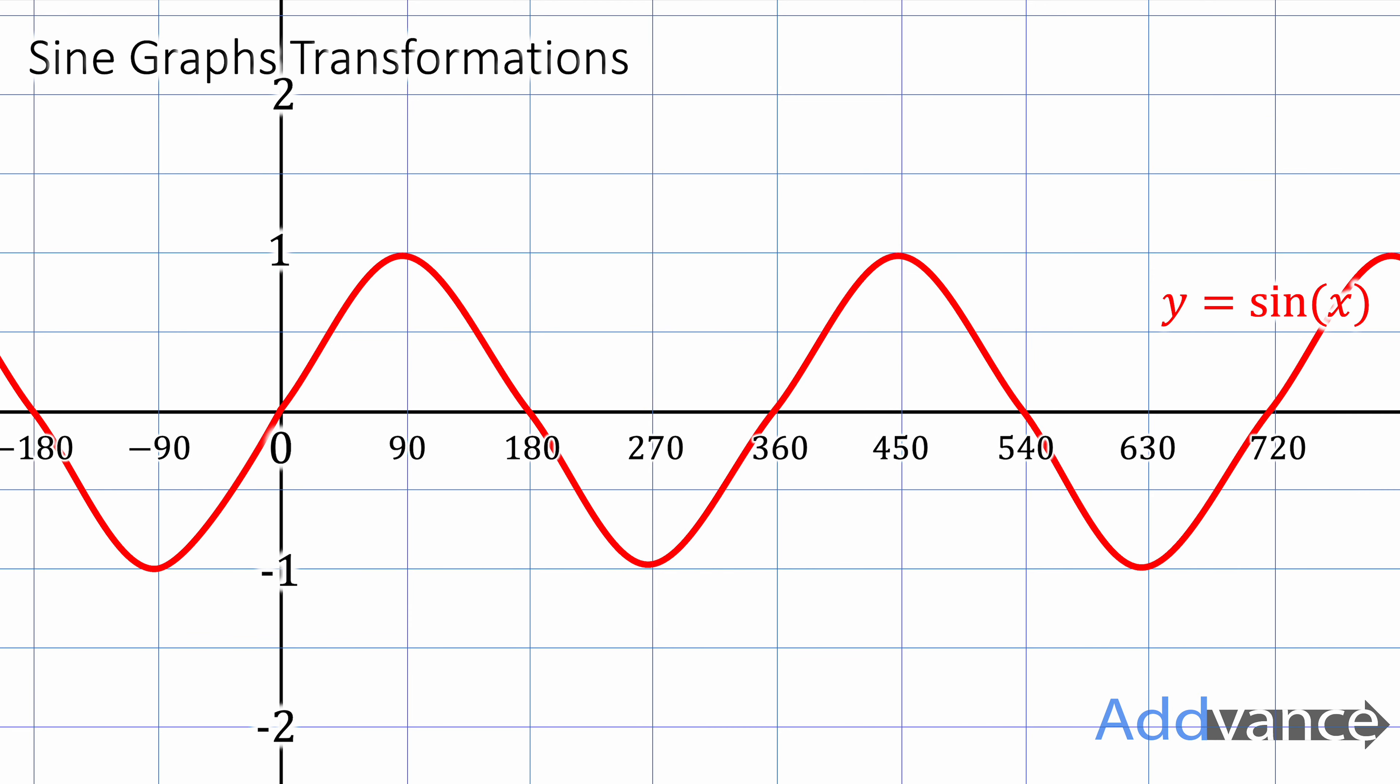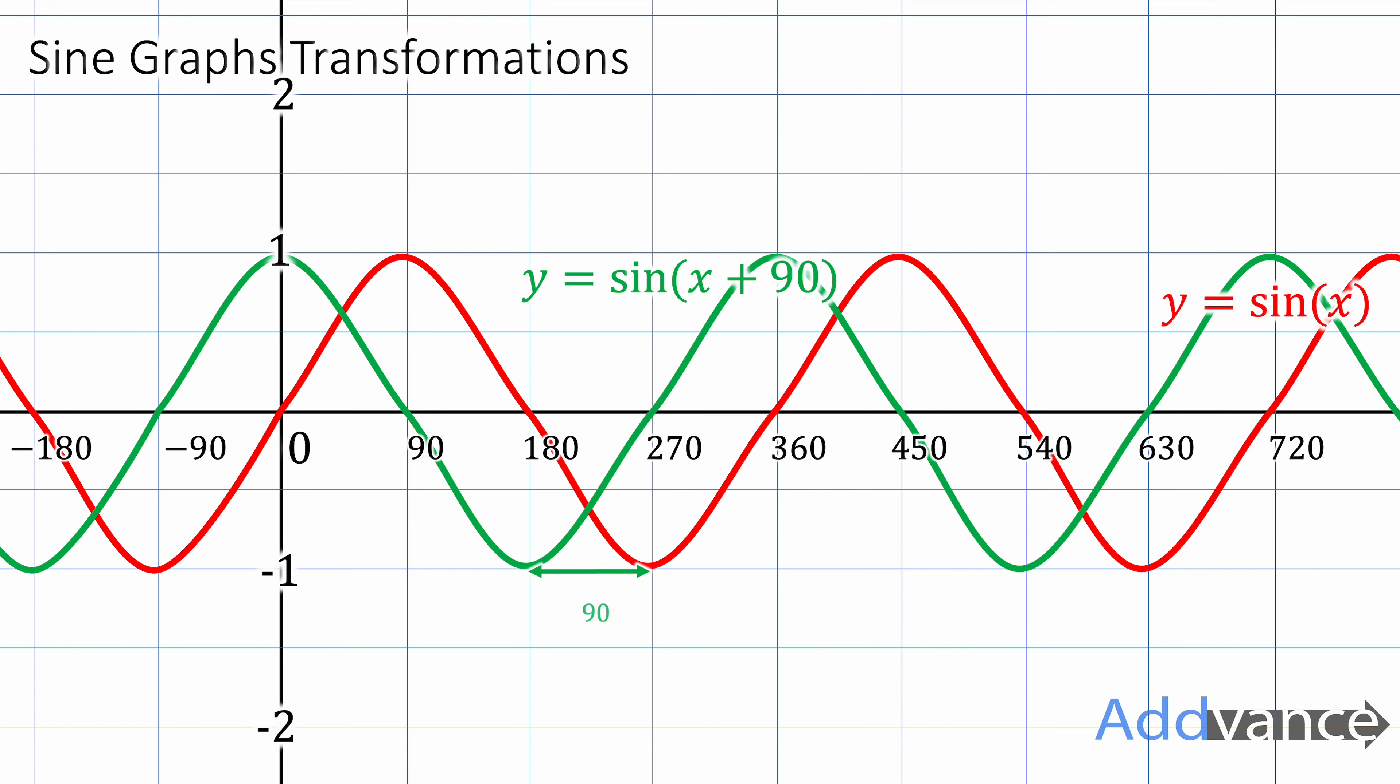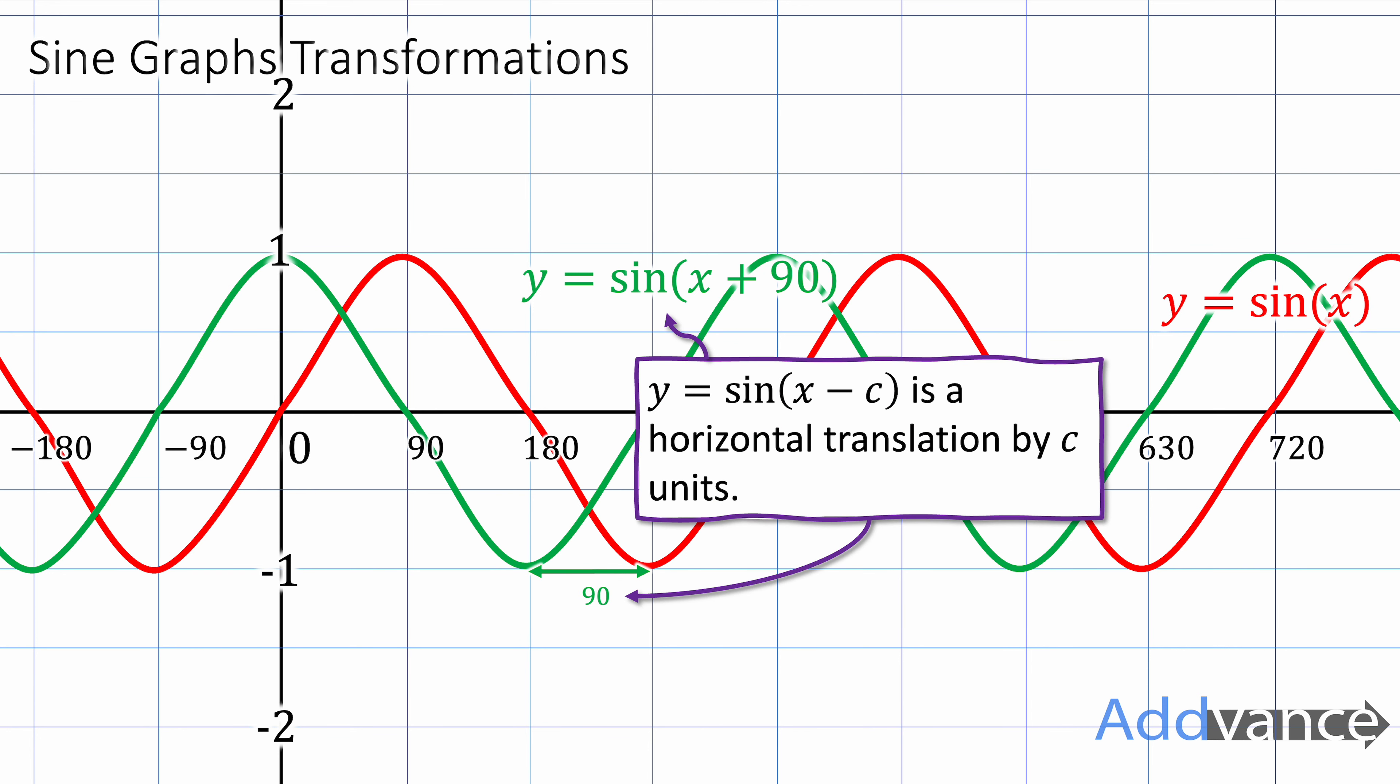Now we can also have horizontal transformations. So we could add 90 inside the brackets and that shifts the sine graph 90 degrees towards the negative to the left. So y equals sin of x minus c is a horizontal translation by c units.